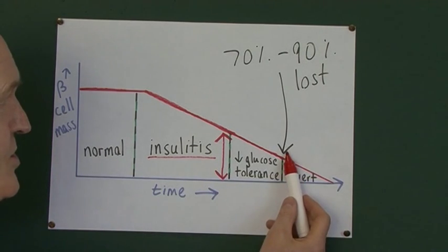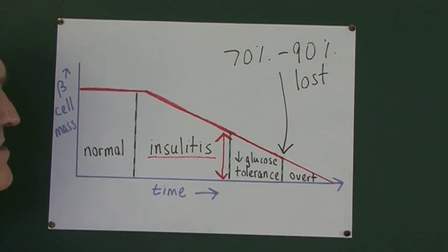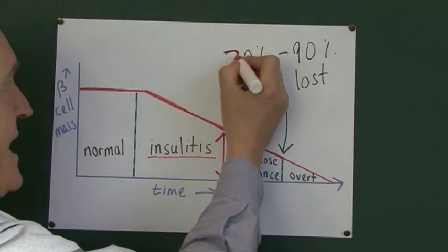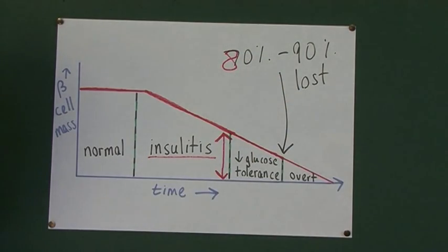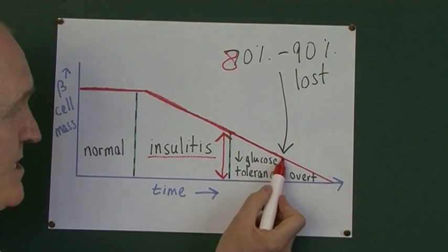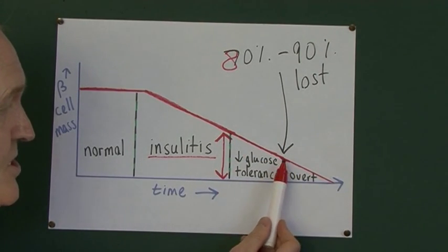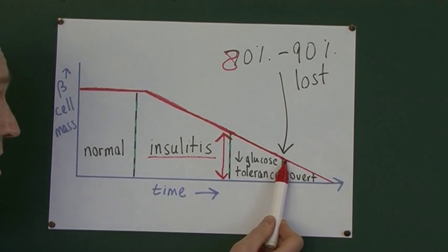And it's only when the patient's lost, this has got 70 to 90%, it's probably actually more 80 to 90%. It's only when the patient's lost the vast majority of their beta cells down at this level, that they actually start to suffer from the clinical features of diabetes.